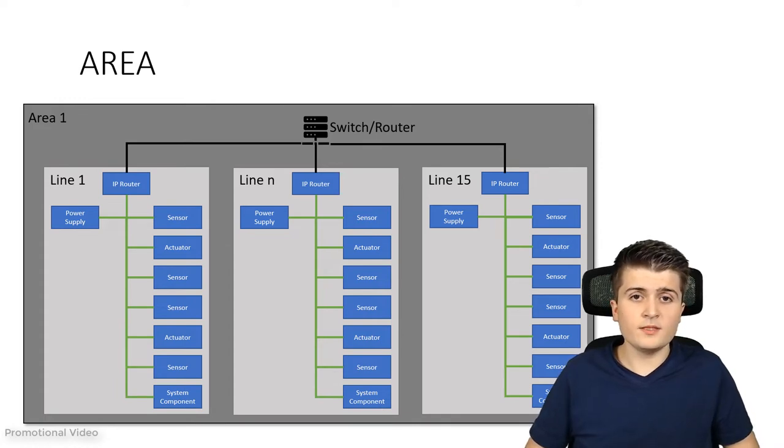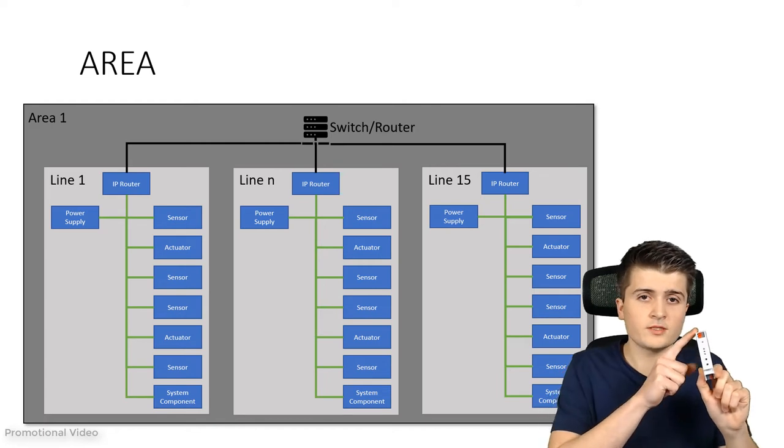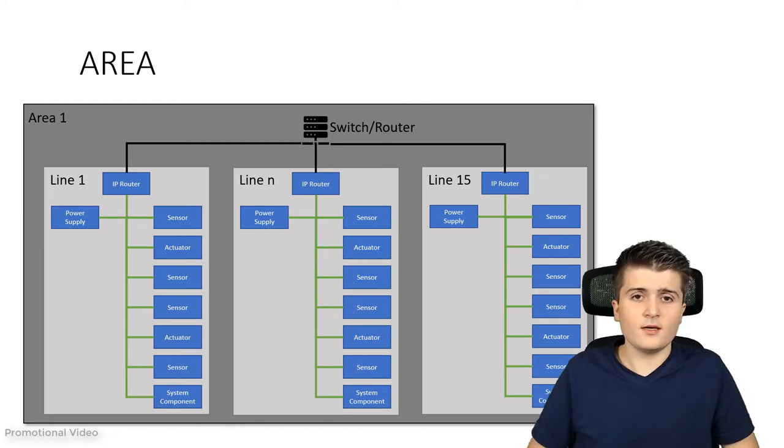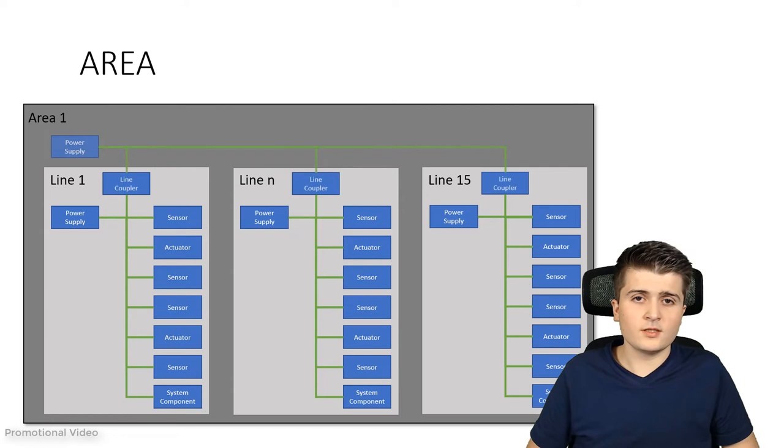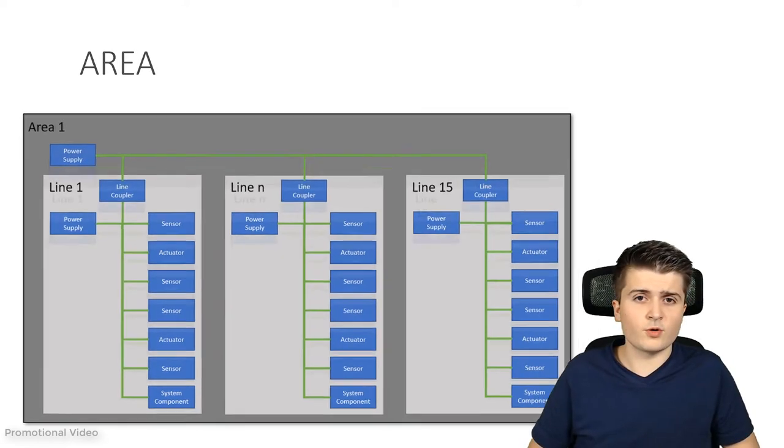Now the last step would be to connect all of our areas together. This only counts for the case if we use a line coupler, so if we have twisted pair on our area side, because if we would have chosen IP on the area side, well then simply every line is connected to our network and they can communicate together on this way. So let's see how the backbone works.